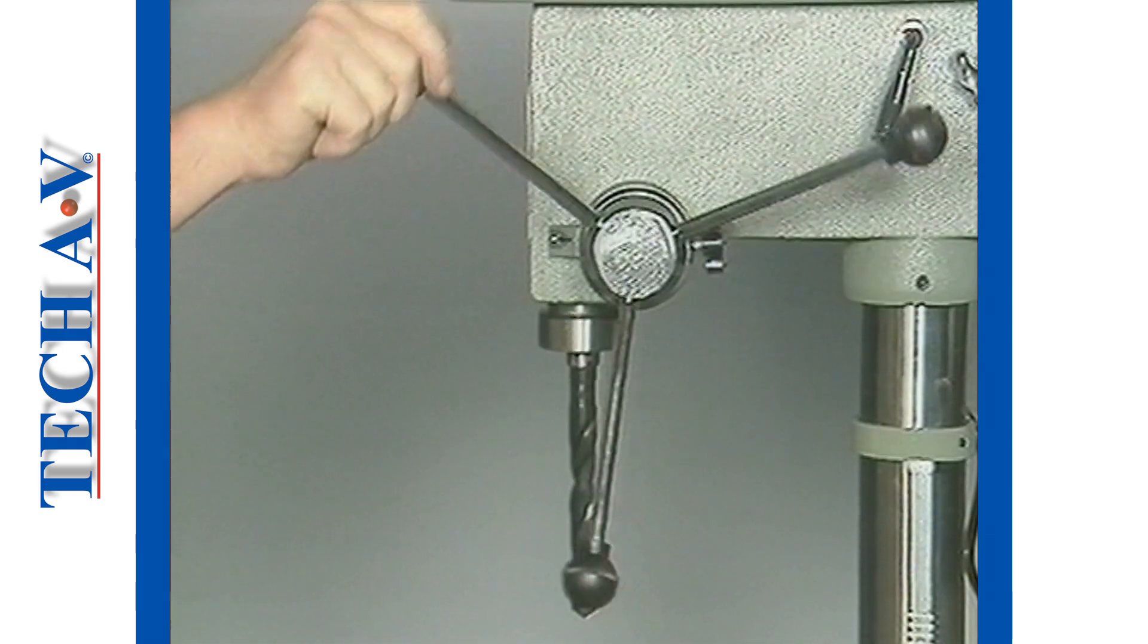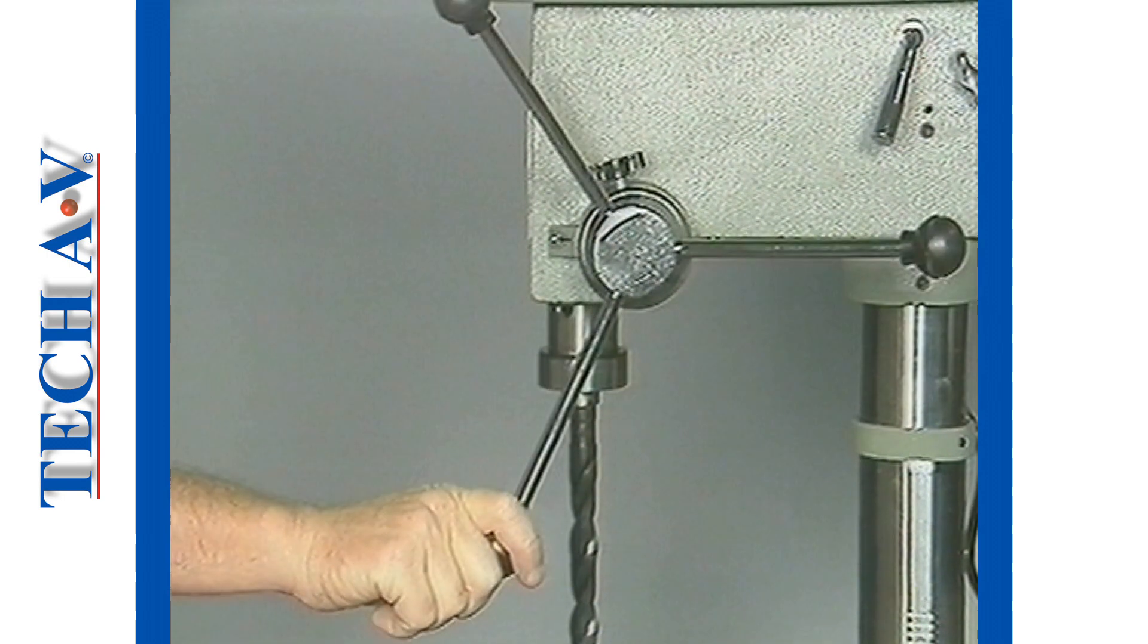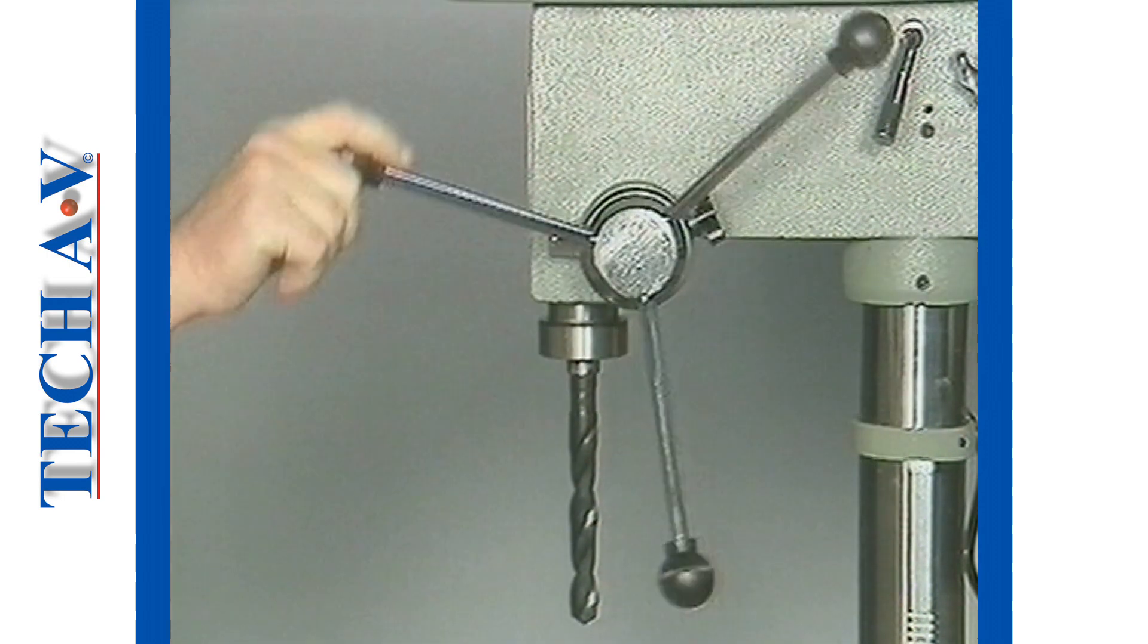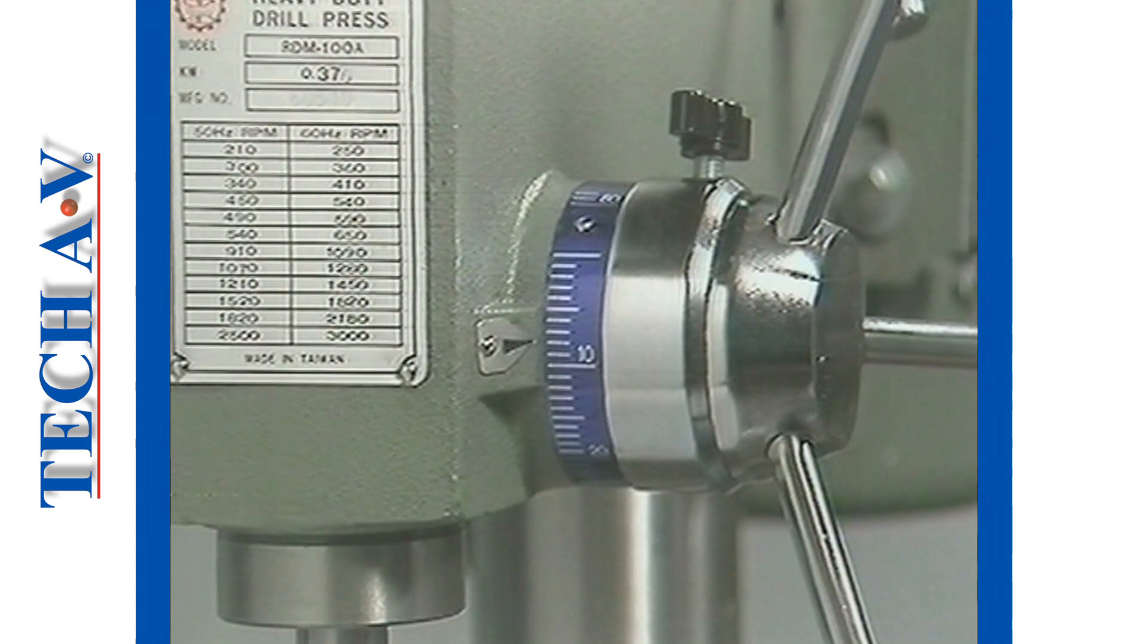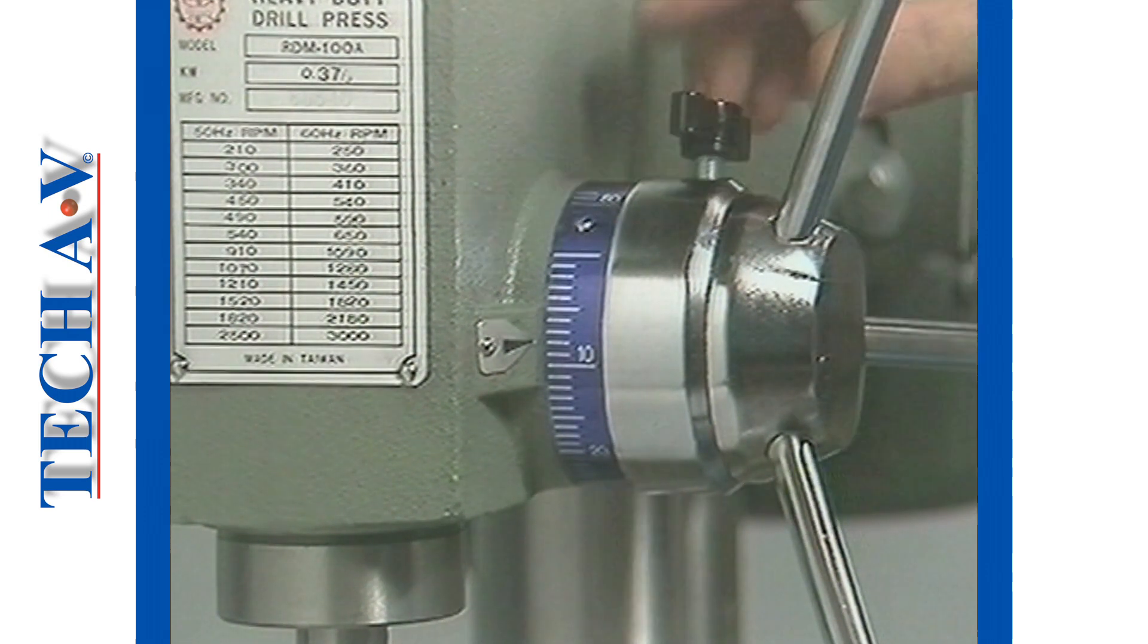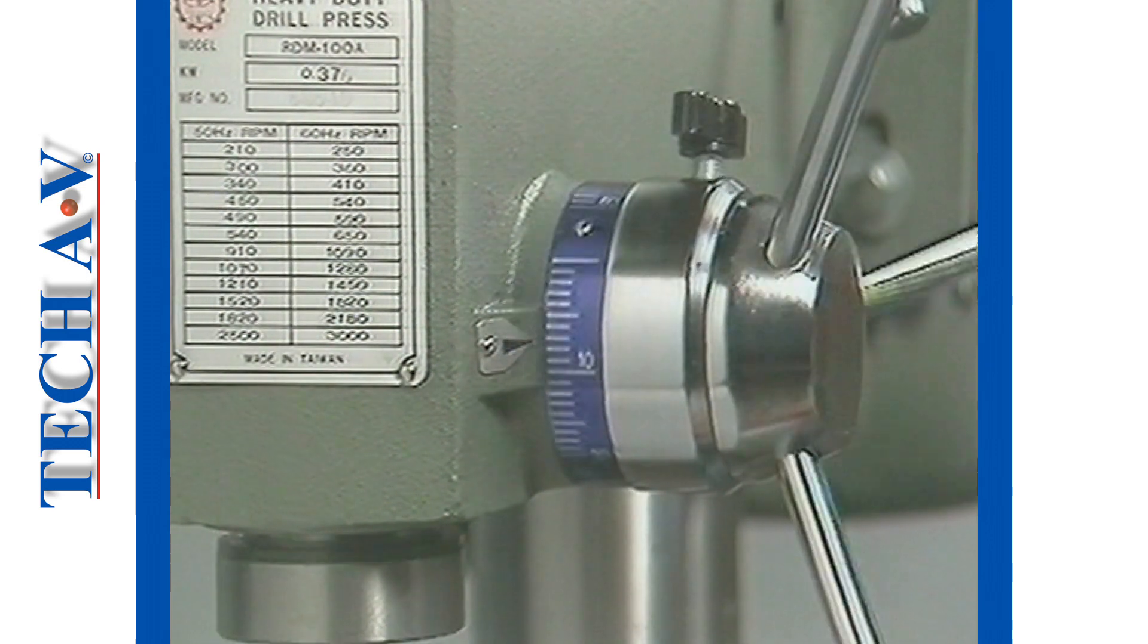An operating lever provides the means to lower and raise the spindle. Spindle travel adjustment can be set on the depth-limiting collar for precise drilling depths.